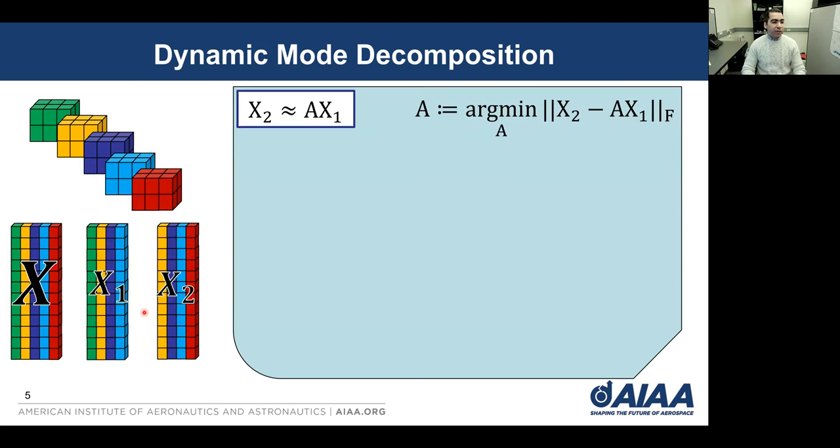We define A as the mapping from X1 to X2 in a least squares approach. Usually this A operator is a very large matrix so we can project it into a low rank basis defined by Ur, which can be the most dominant POD basis functions from the singular value decomposition of X1.